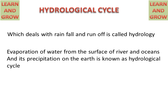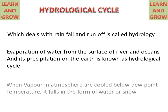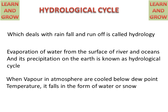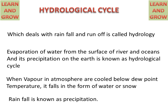Evaporation of water from the surface of rivers and oceans and its precipitation on earth is known as the hydrological cycle. When vapour in the atmosphere cools below dew point temperature, it falls on the earth in the form of water or snow. Rainfall is also known as precipitation. Now we will see the working cycle of the hydrological cycle.